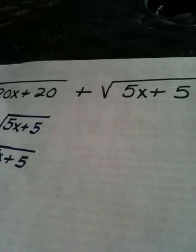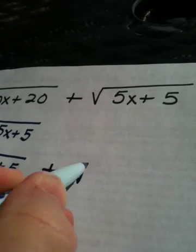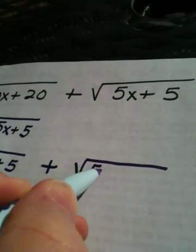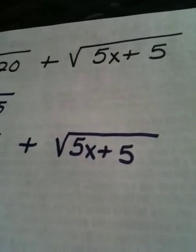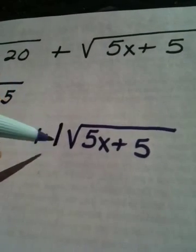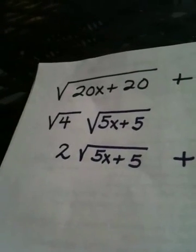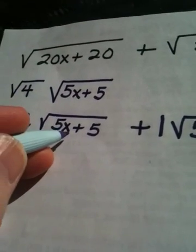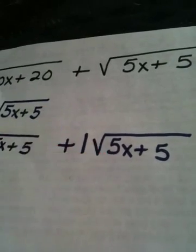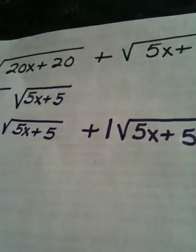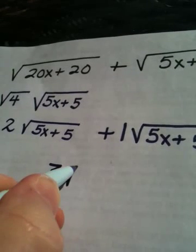Now, the next part of the problem, I'm just going to bring down. I'm bringing down the square root of 5x plus 5. There's 1 of those, correct? So when I have 2 of these plus 1 of the same thing, I end up with 3 of those.